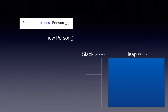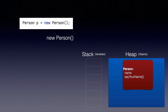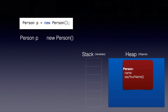First of all, the new keyword is used to create an object. As soon as this instruction is run, an object is created on the heap. Moving on — person p means a variable called p is created on the stack.